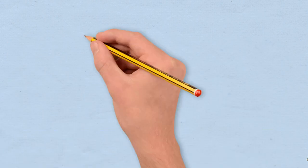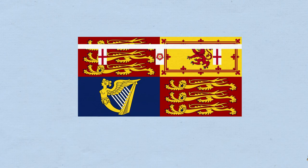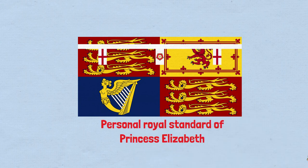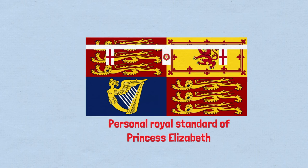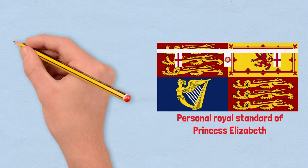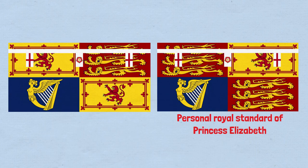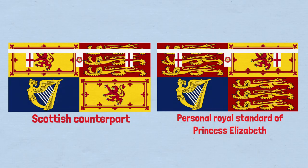One thing I found really interesting is that Elizabeth II, prior to becoming sovereign, had a personal standard as princess. It's basically the regular royal standard with a white strip, eight Tudor roses, and two crosses of St. George to the sides, along with a Scottish counterpart that replaces one of the English quadrants with another Scottish one.